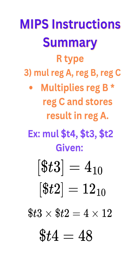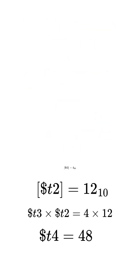Example: mul T4, T3, T2. We're given the contents of T3 and T2, so we would multiply those — 4 times 12 — to get 48, which is stored in register T4.